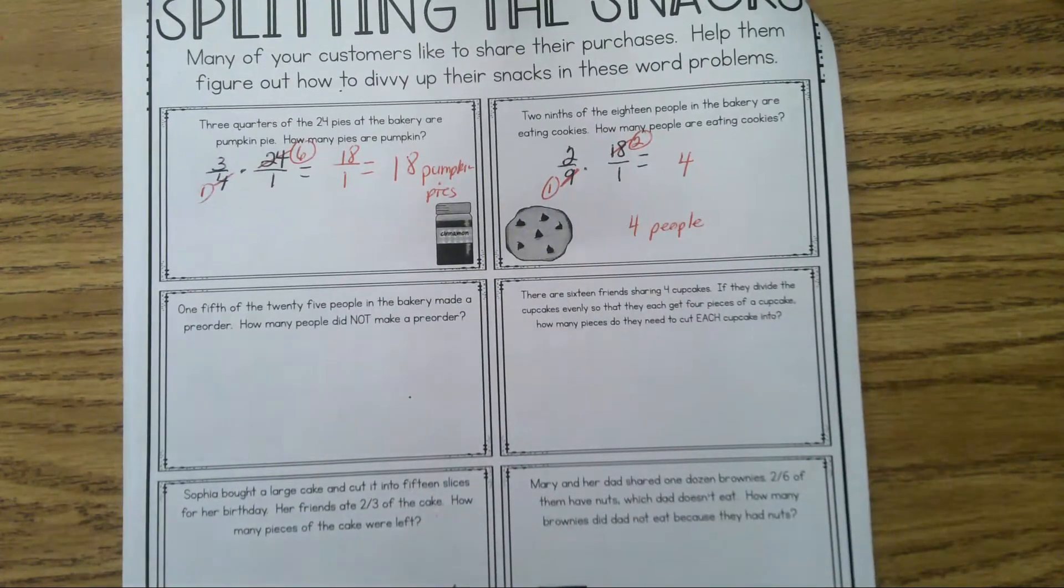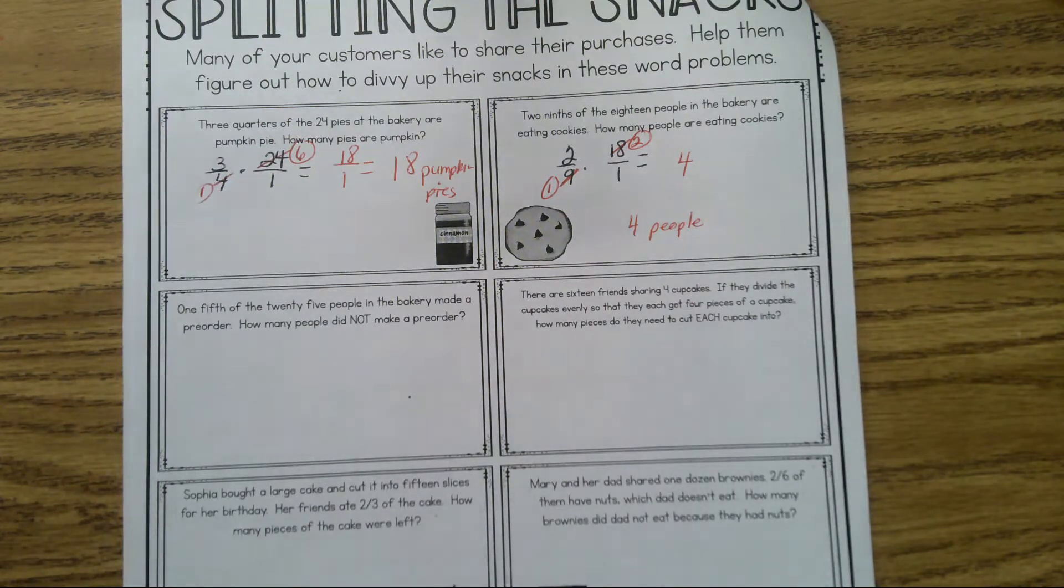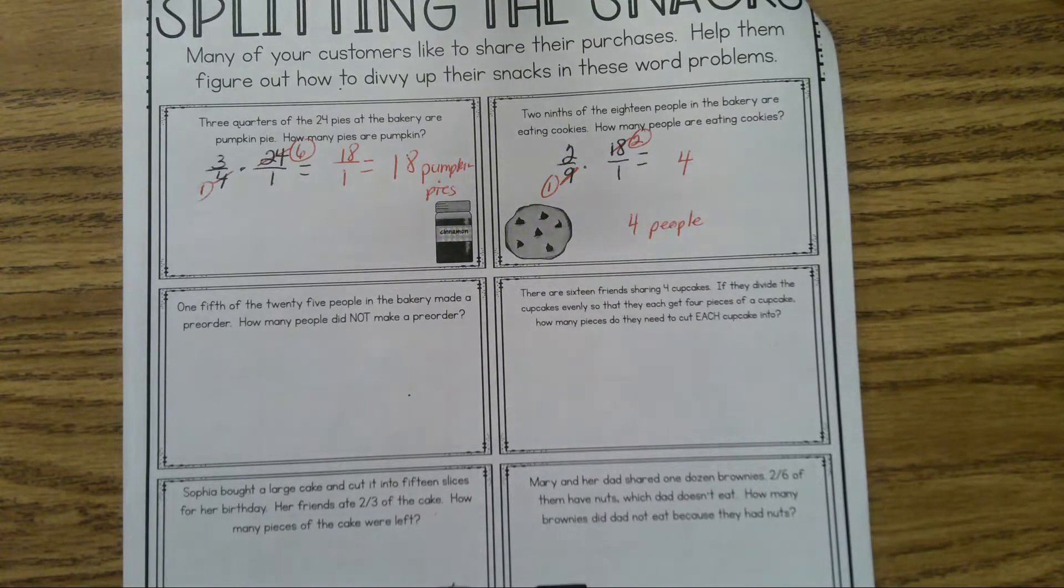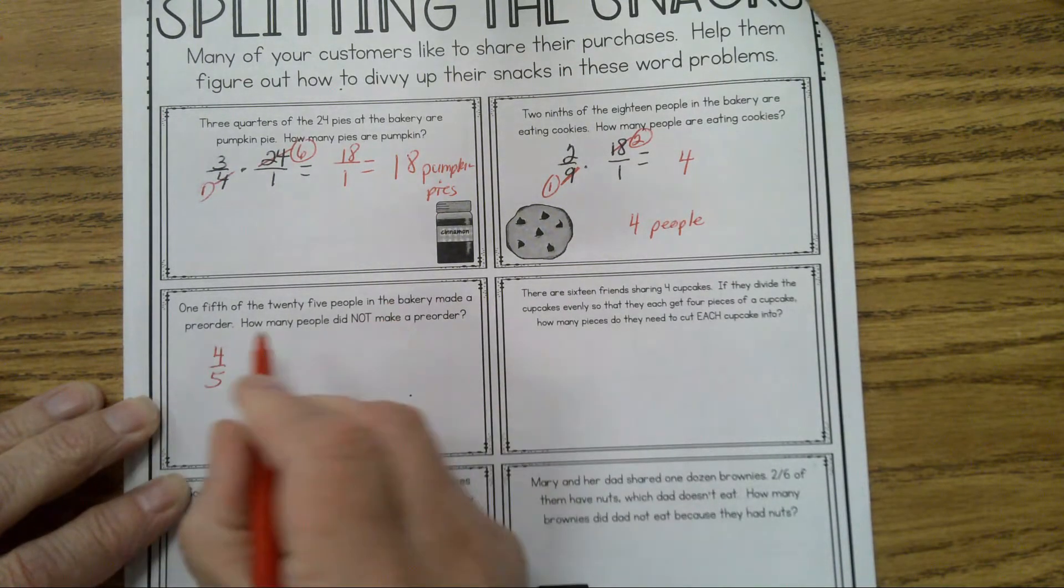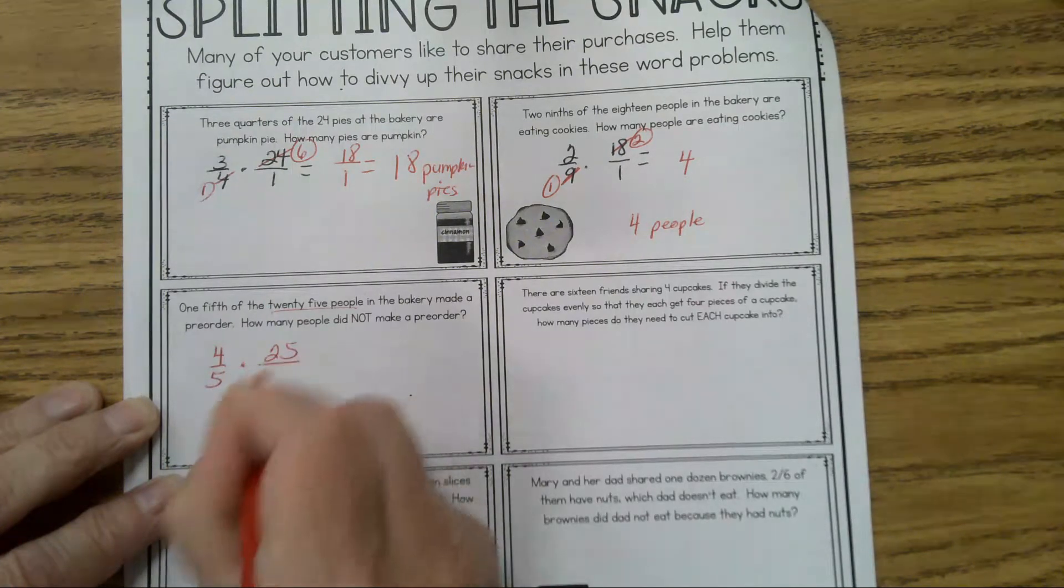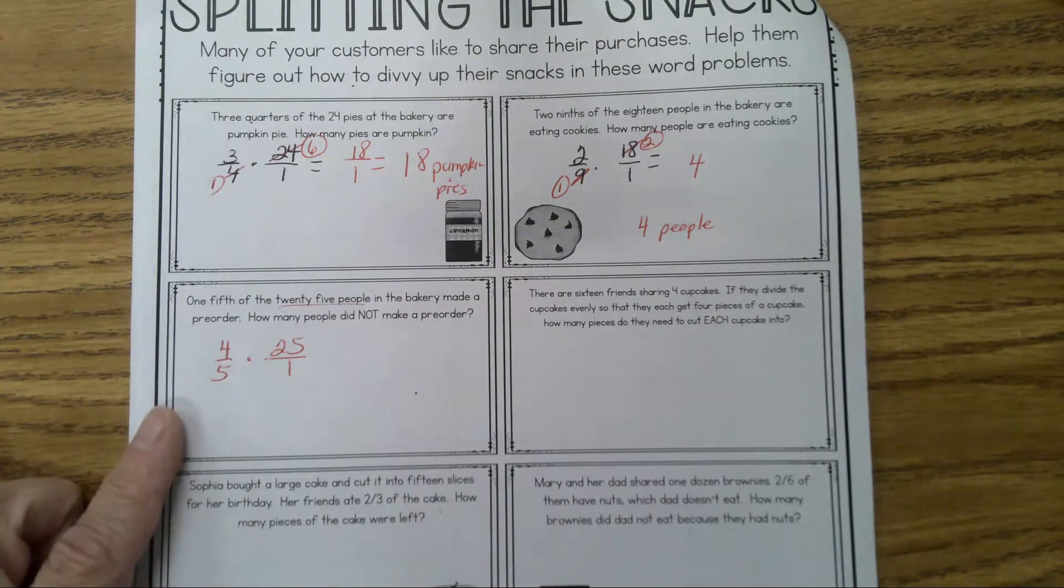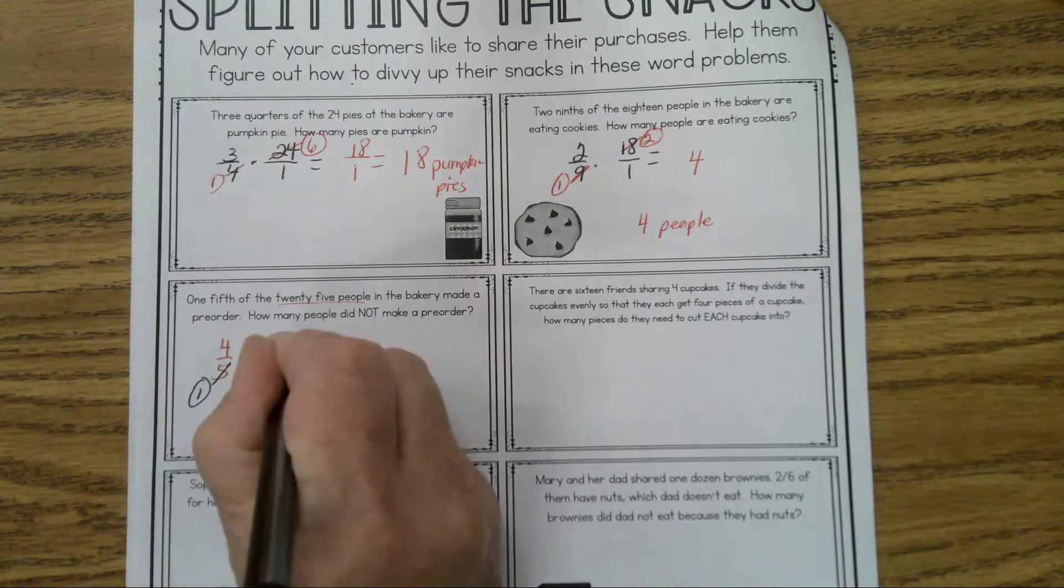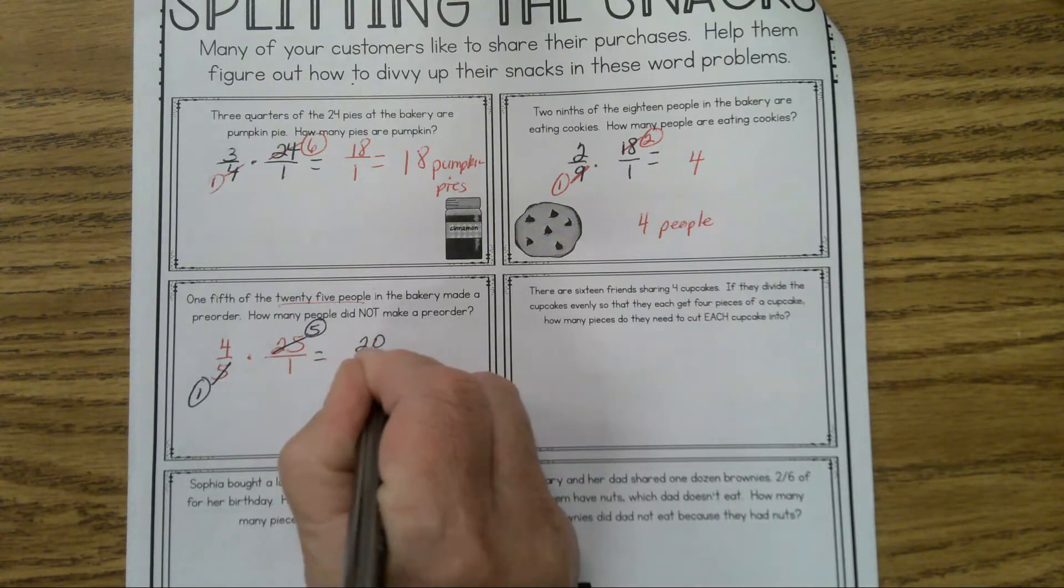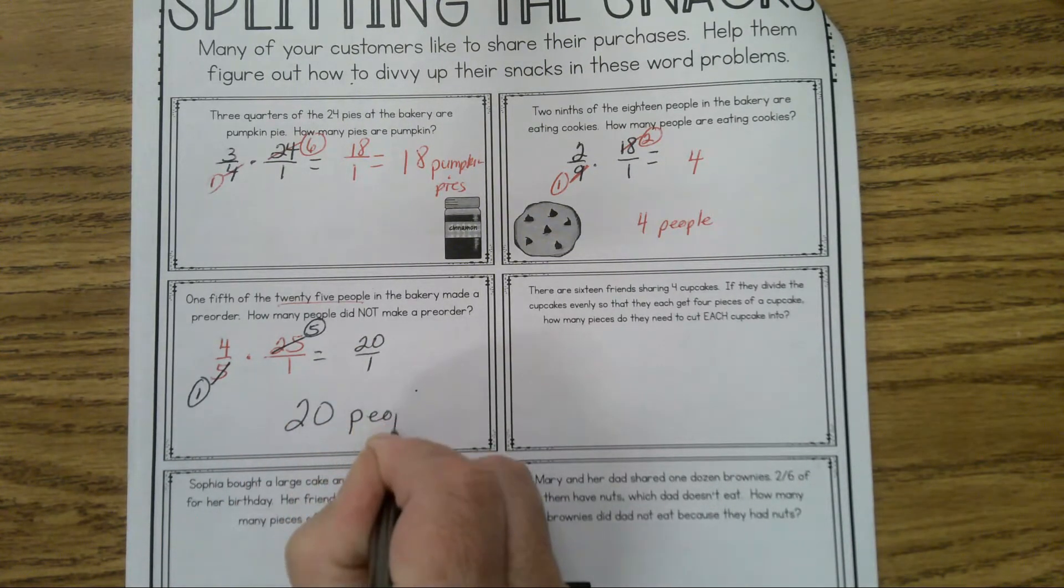Let's go on to the next problem. Heidi volunteers to read. So what fraction did not make a pre-order? 4/5, very good. So we're going to have 4/5 of 25 did not pre-order. That's called a complement. The complement to 1/5 is 4/5 because 1/5 plus 4/5 makes a whole. Once again, simplify before you multiply. 5 goes into 5 once, 5 will divide 25 five times, and you get 20 over 1, or the answer 20 people.